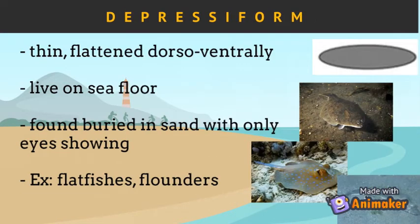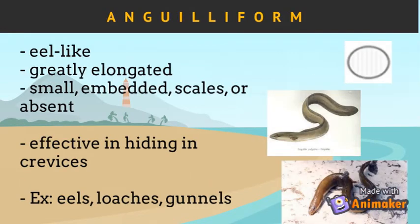Depressiform is the third type of body form. Fish with a depressiform body form are thin, flattened, and compressed dorsoventrally. They evolved to live on the sea floor, feeding on organisms in the mud and sand. They are usually found buried in sand with only their eyes showing, waiting to attack their prey. Fish with this body form include flatfishes, flounders, and rays.